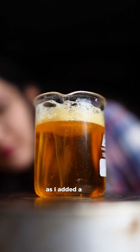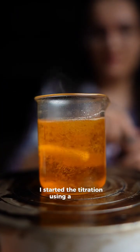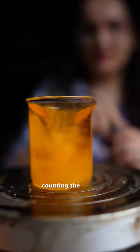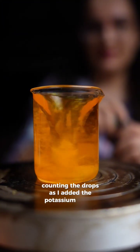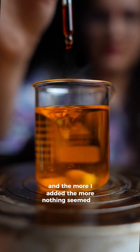As I added a few drops of starch as an indicator I started the titration using a simple dropper, counting the drops as I added the potassium iodide solution, and the more I added the more nothing seemed to happen.